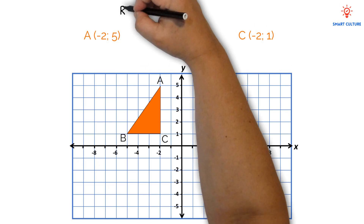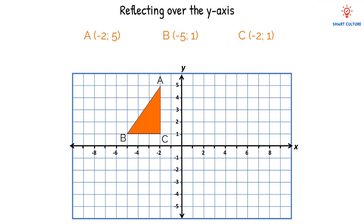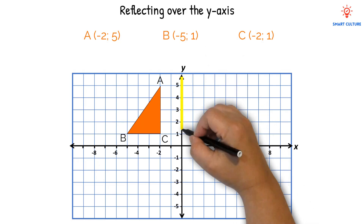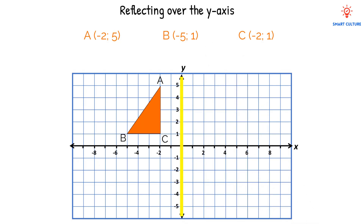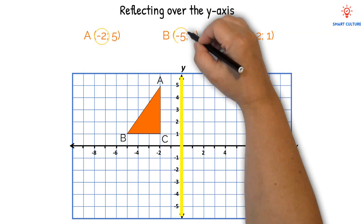Now we need to reflect this triangle over the y-axis line. When reflecting across the y-axis, the y-values of the original image stay the same because the reflection is occurring along a vertical line and the vertical position remains unchanged. However, the x-values become opposite because the reflection involves a horizontal flip.